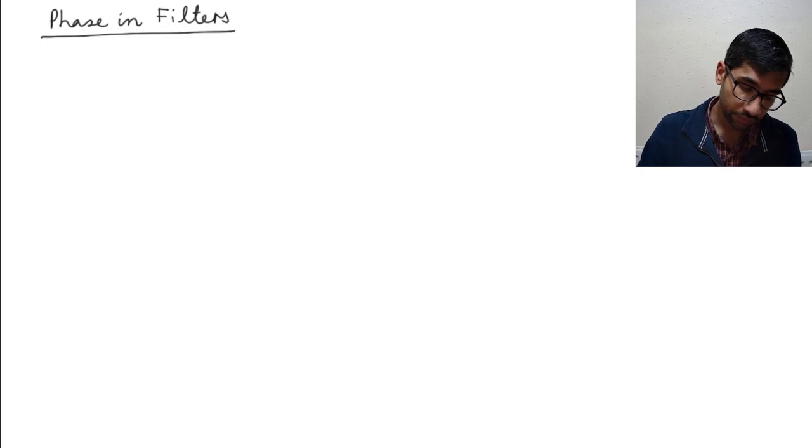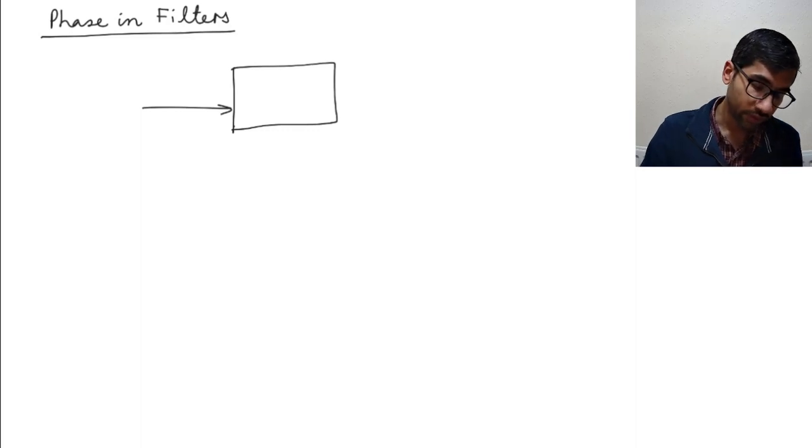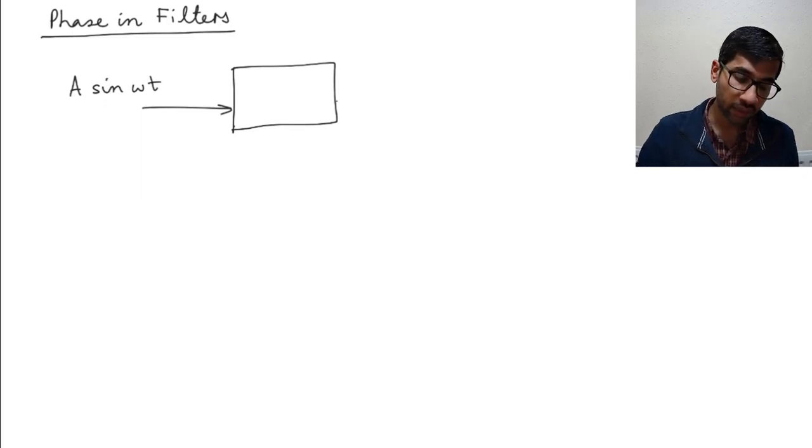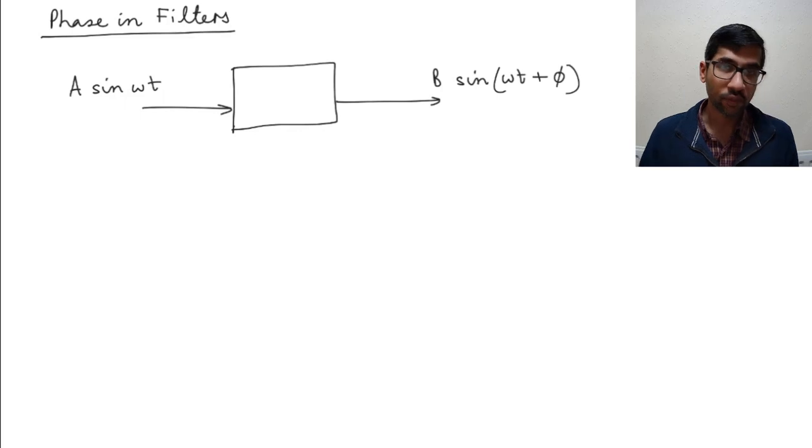So if you have a filter and you give a sine wave of a certain frequency or some signal of a frequency, let's say I give a signal of frequency omega, what we are basically looking at is how the amplitude changes. So we get a signal of sine omega t plus phi and what we have been interested in is looking at the gain, and the gain is given by b over a.